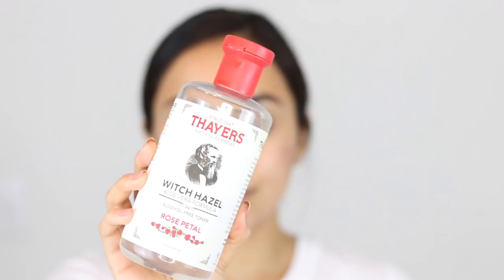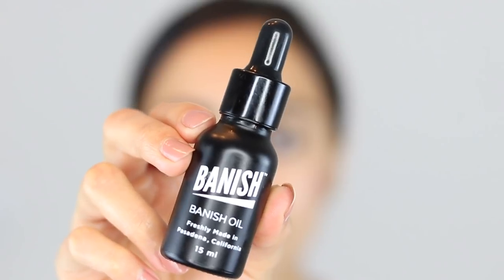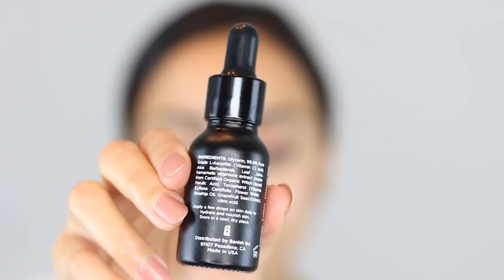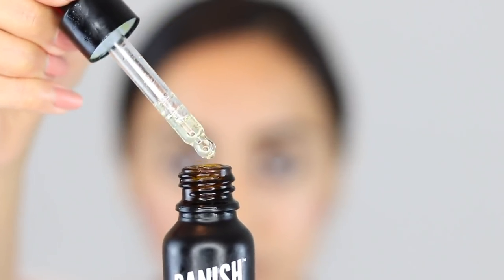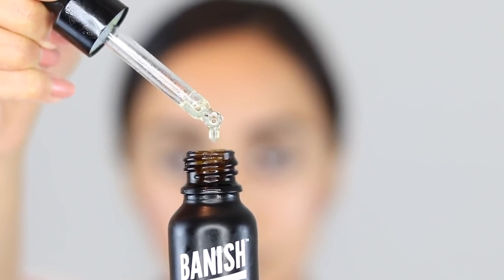Once I'm finished with the stamping or the rolling, I follow up with my toner. Since we just created all these micro channels in our skin, any products we apply right after will really absorb into the skin. I would of course recommend using 100% natural products. After the toner I go in with the Banish oil, which is a vitamin C serum. It's all natural and vitamin C is actually used by the skin to create collagen, so it works perfect in combination with the micro needling.